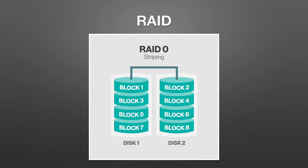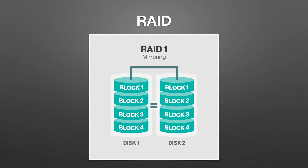RAID 0 is fast and cheap with no data redundancy. It requires a minimum of two hard drives, and the data capacity just adds up — two one-terabyte drives will appear as one two-terabyte drive on your system. This combination is most often used when speed is needed and low cost is required. RAID 1 has complete data redundancy and also requires a minimum of two drives. It's often called mirroring because each drive is a complete copy of the other. This RAID will be no faster than the slowest drive, but it's very secure — if one drive fails, you can pop it out, pop a new one in, and the information is mirrored on one of your other drives and can be written onto the new drive.